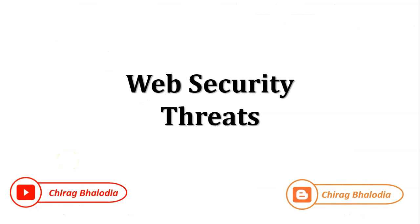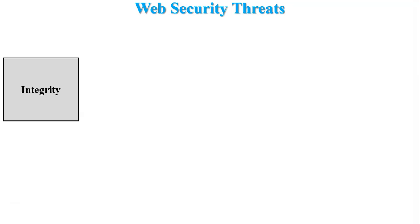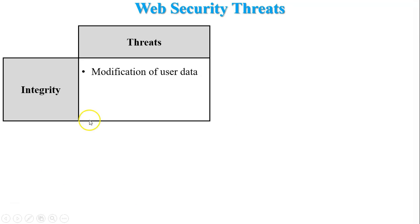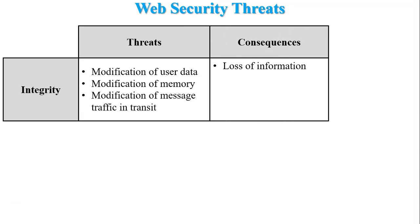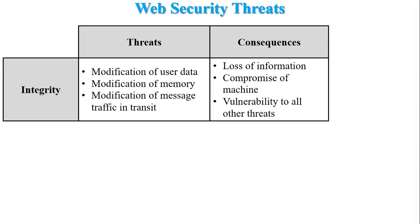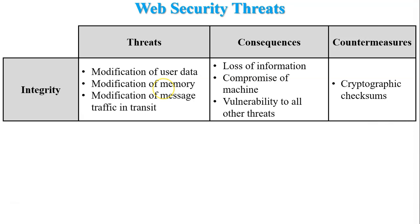Web security threats are discussed based on security goals. Integrity means a message should not be altered during transmission; if altered, the integrity is broken. Threats that break integrity include modification of user data, modification of memory, and modification of message traffic in transit. Consequences include loss of information, compromise of machine, and vulnerability to all other threats. To counter these threats, use cryptographic checksums.